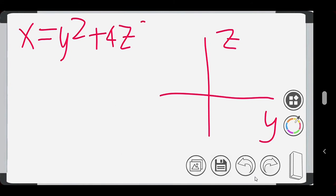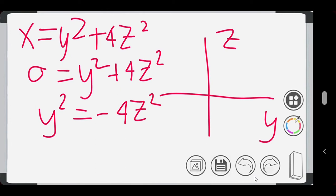Now let's consider finding the trace in the yz plane. Remember, our equation x is equal to y squared plus 4z squared. First, we set x equal to 0. Then, we have our equation y squared is equal to negative 4z squared. Take note that we cannot take the square root of a negative integer because we can arrive at an imaginary number.